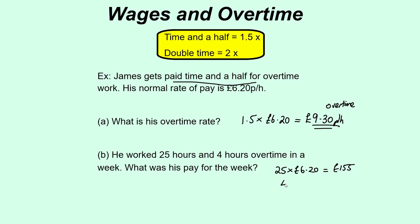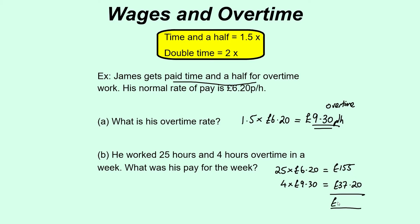Then his 4 hours of overtime: 4 times £9.30. So 4 times £9.30 would be £37.20. His total gross pay for that week would be £155 plus £37.20, and that gives you £192.20 — just adding those two values together.